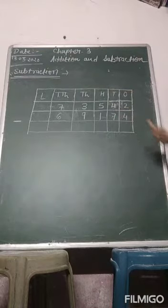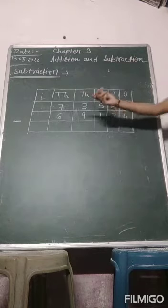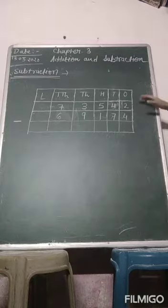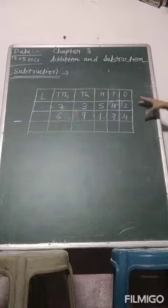Borrowing can be done by borrowing a number from the next higher place value of the greater number. So students, consider the number in the place value chart, place the greater number in the first row.